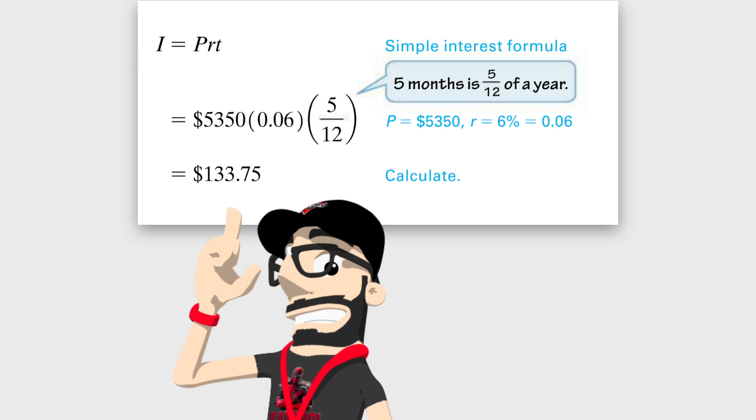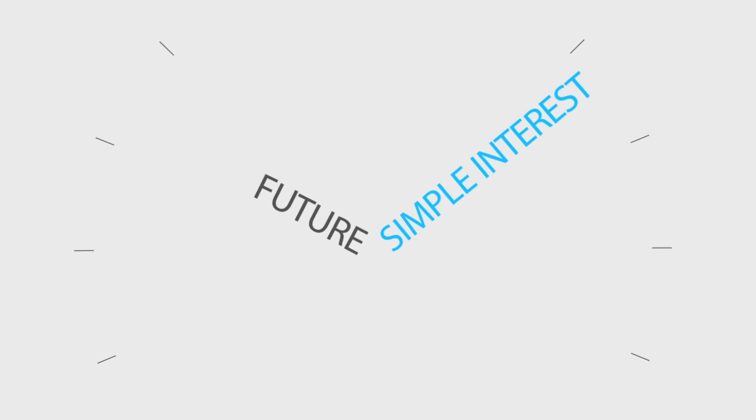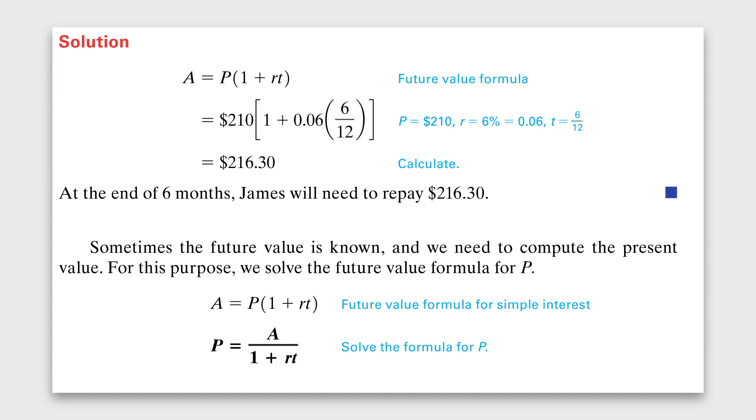After you run your calculation you'll see that you get $133.75. We can now take that and work out the future simple interest. Here's another example of that.